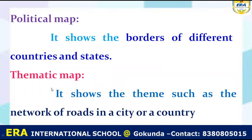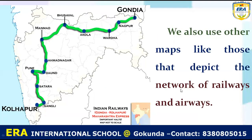Fourth — thematic map. This map is used to show themes such as the network of roads in a city or country, including national highways, highway roads, and state roads. Maps are also useful to show the network of railways and airways — for example, the Indian Railways map. Maps are very useful to human beings.